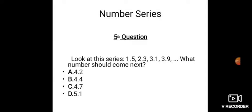The fifth question is: look at this series: 1.5, 2.3, 3.1, 3.9. What number should come next? Option A: 4.2, Option B: 4.4, Option C: 4.7, Option D: 5.1.